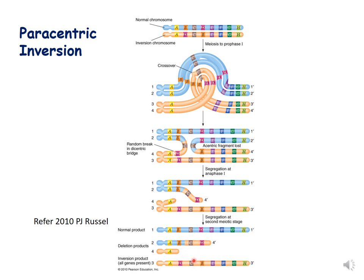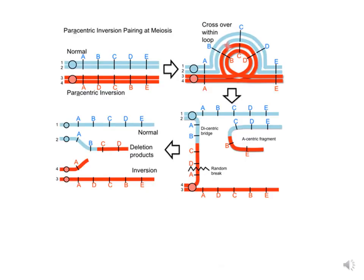This is another diagram showing the same phenomenon, with two homologous chromosomes. In the second picture both chromosomes are undergoing loop formation, and in the third picture the normal chromosome and the inverted chromosome are visible.